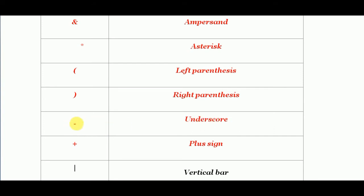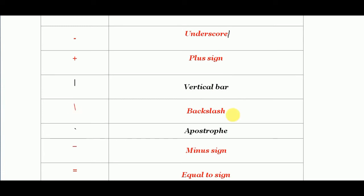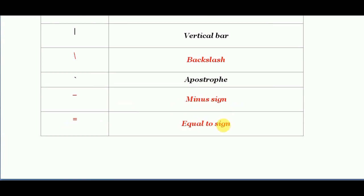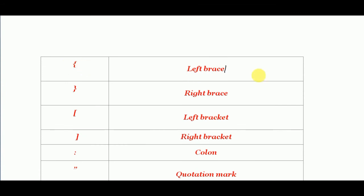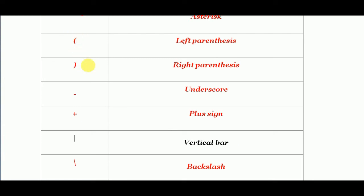When you type a C program you will come to know the use of underscore. Then this is called plus sign. This is called vertical bar. Then this sign is called backslash. Then this sign is called apostrophe. This is the minus sign. Then this is called equal-to sign. Then this opening bracket is called left brace and the closing is called right brace. This kind of bracket is called left bracket, and its closing is called right bracket. There are three kinds of brackets — all with different names.